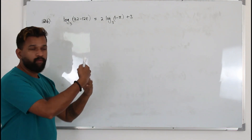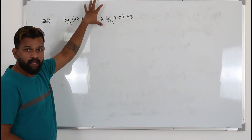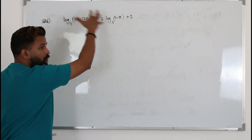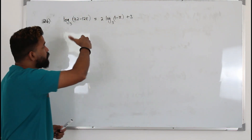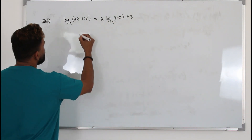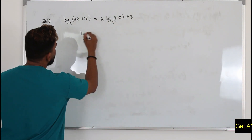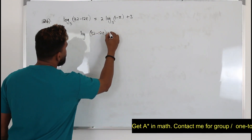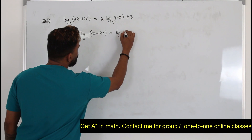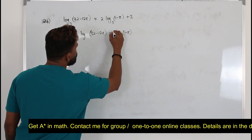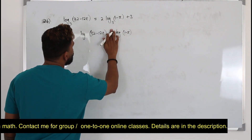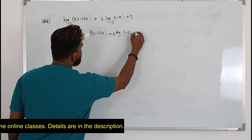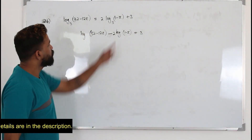There are a few steps involved if you want to solve this equation. Step number one: you have to collect all the logarithmic functions to one side of the equation and push the numbers to the other side. So you will have log 3 of (2 minus 12x) minus 2 log 3 of (1 minus x) equals 3.